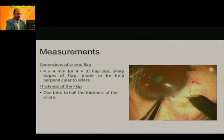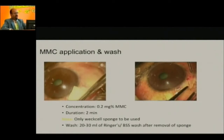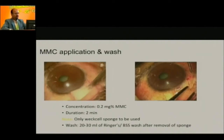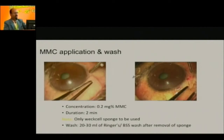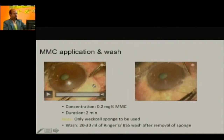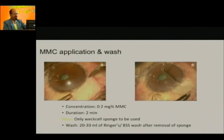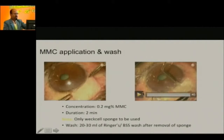Mitomycin C is something we use regularly for all patients. The idea is to keep it over a very large area using multiple small pieces of polyvinyl alcohol sponge, which is recommended. You leave it for two minutes. We use it for almost all patients except those with rheumatoid arthritis, very old patients, or those with very thin conjunctiva. Once you leave it for two minutes, thoroughly wash it with about 15 to 20 cc of balanced salt solution or Ringer's lactate.